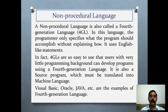A non-procedural language is also called a fourth generation language, or 4GL. In this language, the programmer only specifies what the program should accomplish without explaining how to do it. It uses English-like statements. In fact, 4GLs are so easy to use that users with very little programming background can develop programs using a fourth generation language. It is also a source program which must be translated into machine language.